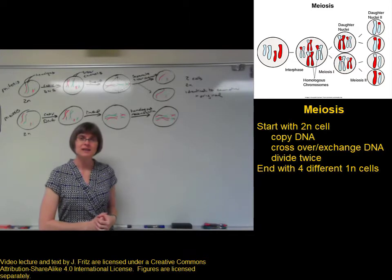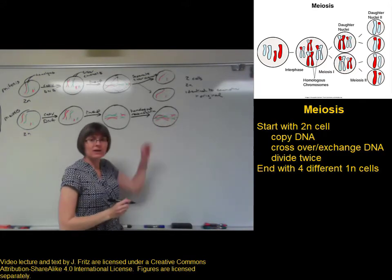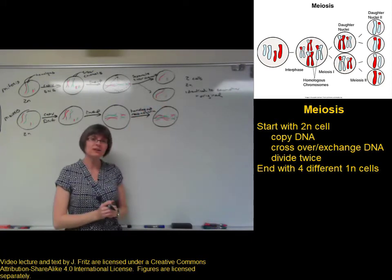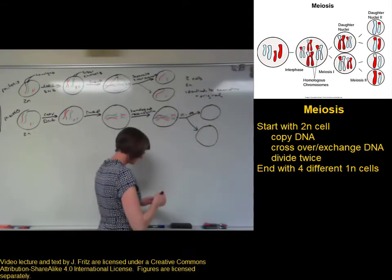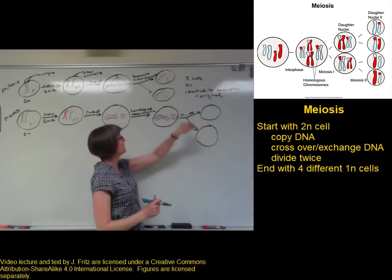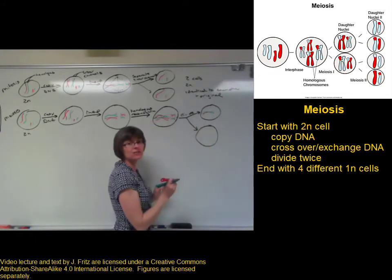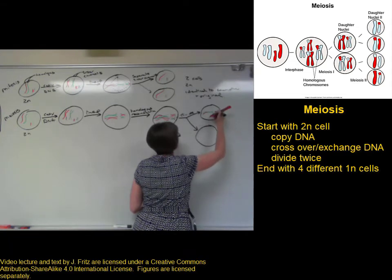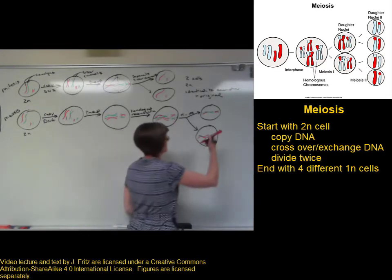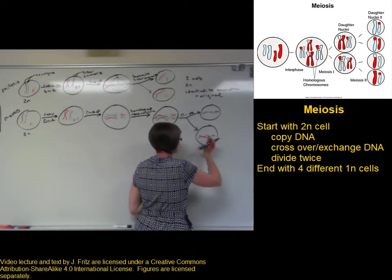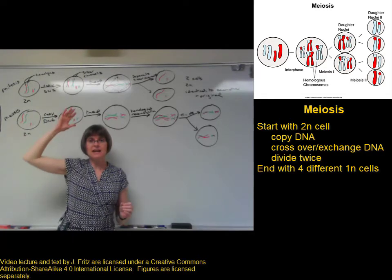Once the crossing over is complete, this cell is going to divide down the middle — everything above the dotted line will end up in one cell, and everything below the dotted line will end up in a different cell. The top cell gets the long green chromosome with a bit of red, and the short red with a bit of green. The bottom cell gets the long red with a little green, and the short green with a little red.